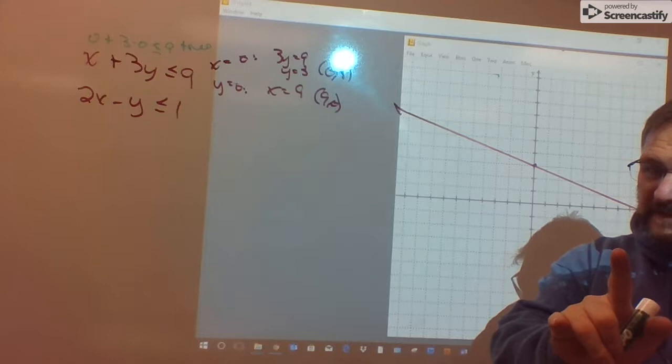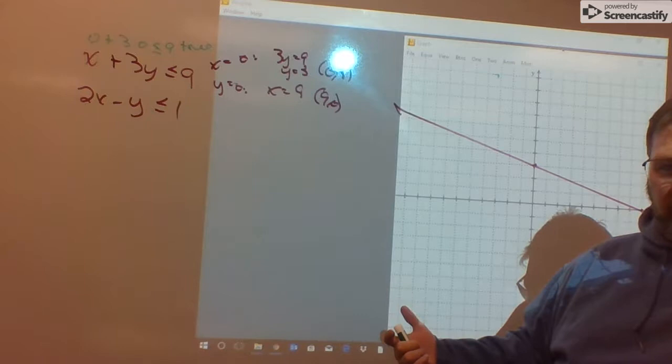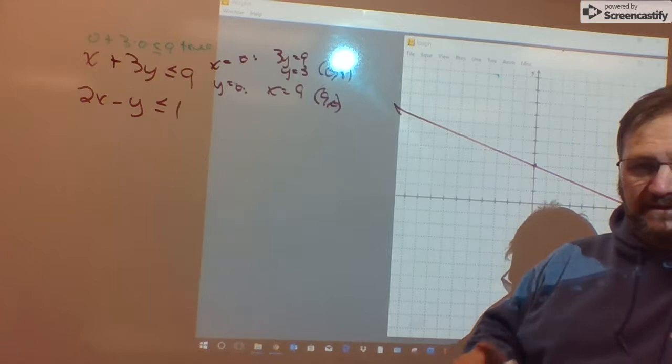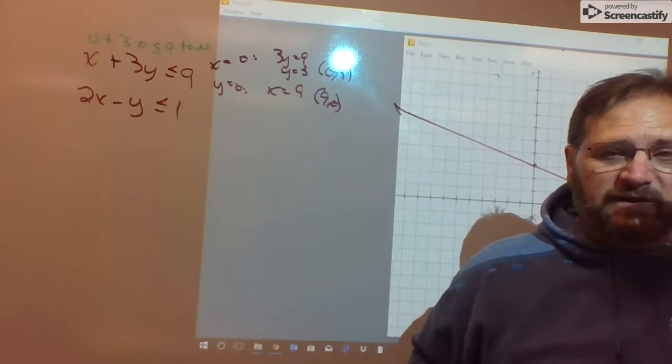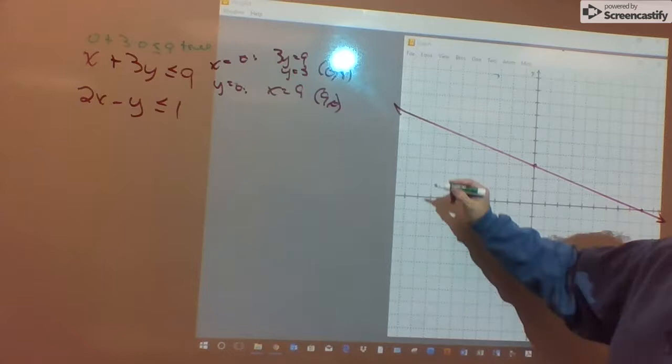I don't want to shade right now because I've got another boundary line to put in and another shaded region to put in and all the shadings could get confusing. So what I decide to do is I just make a little notation here and here at each end of the line to know which side I'm going to shade.